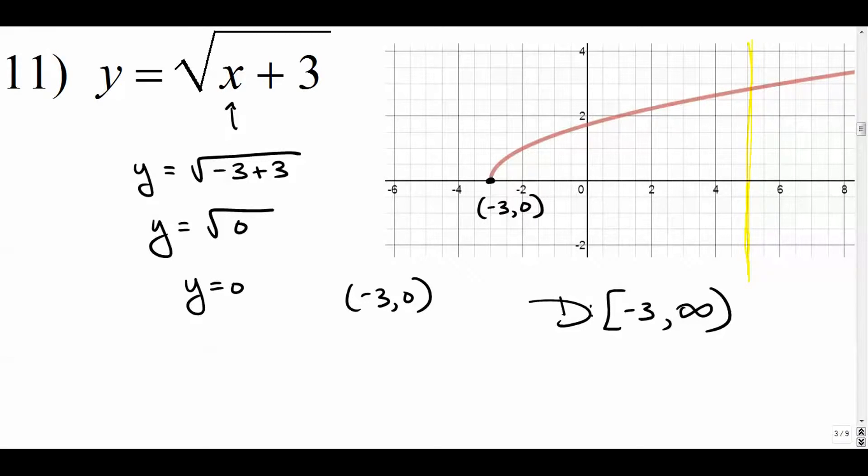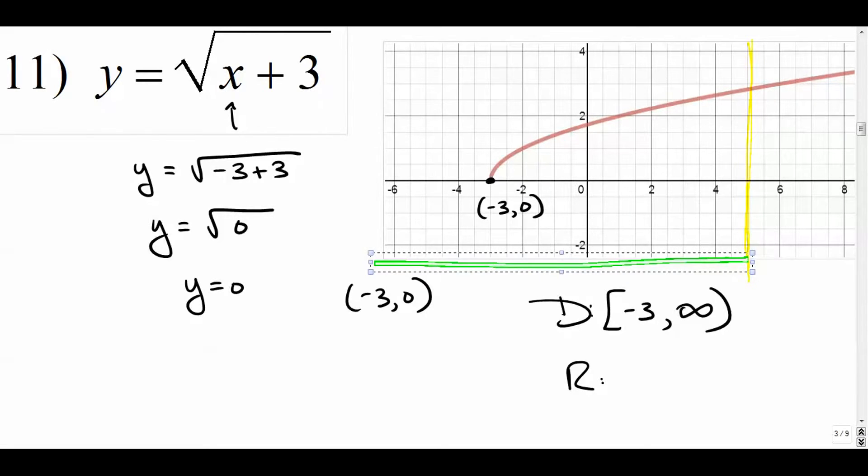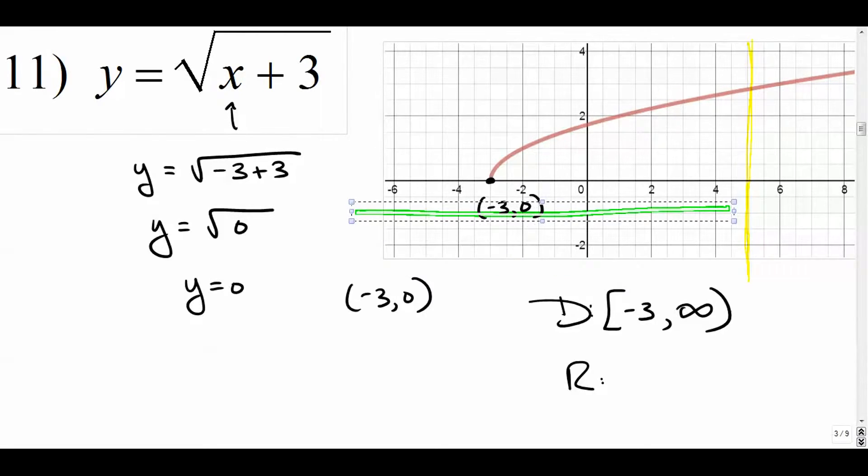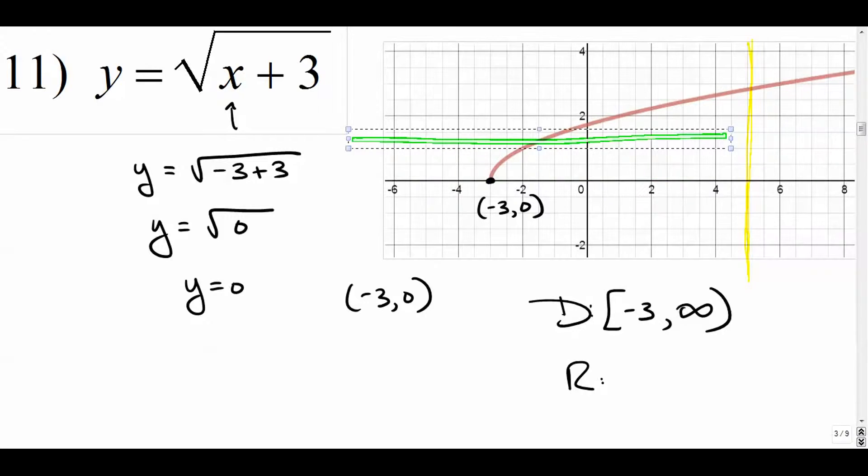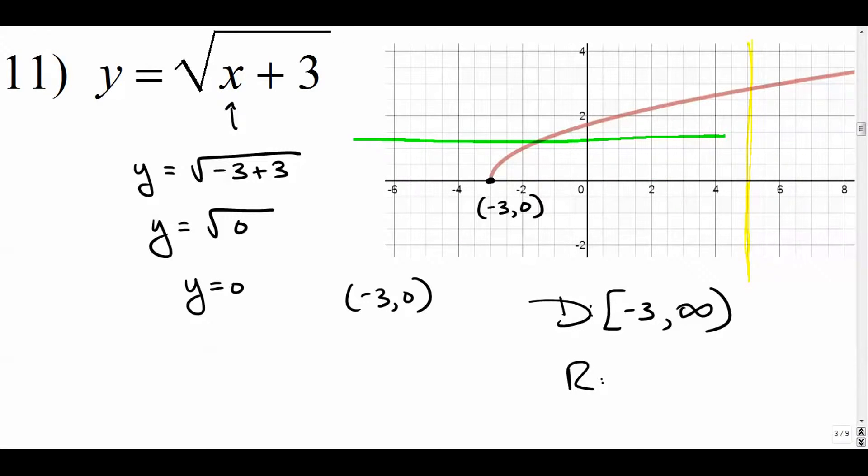So the way that we write that is bracket negative 3 to positive infinity. Infinities always have open parentheses. And the range is a horizontal inspection. So you put your pencil down this way now, and you slide it up until it hits the graph. And you can see that it hits the graph right there at zero. And it goes forever up. It increases forever. And that means that our range is from zero to infinity, just like that.